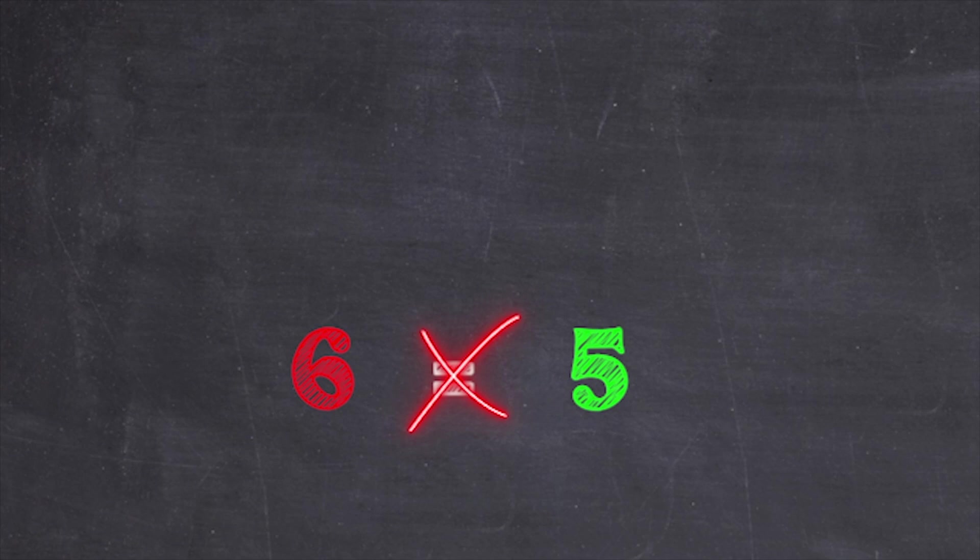Whenever an equation turns out to be false, we write a slash through the equal sign, which is a way to say 2 plus 4 is not equal to 7 minus 2.